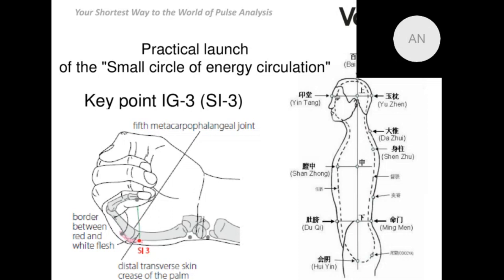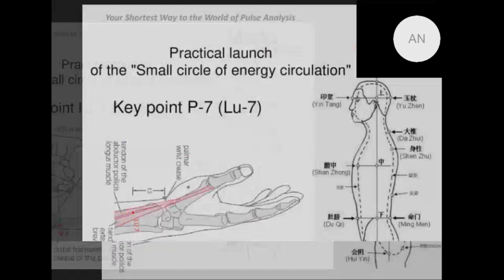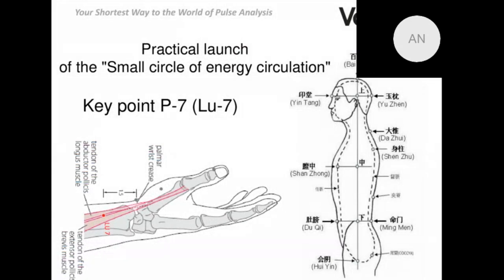Now we are close to our practical part. To work with the channel, first we should activate biological point number three on the large intestine channel, and then start clapping our posterior middle meridian from the sacrum in the direction of our head, along the nose to the lip. After that, we should activate the anterior middle meridian by means of key point number seven, and then continue clapping from the pubis along the middle line up to the lower lip.